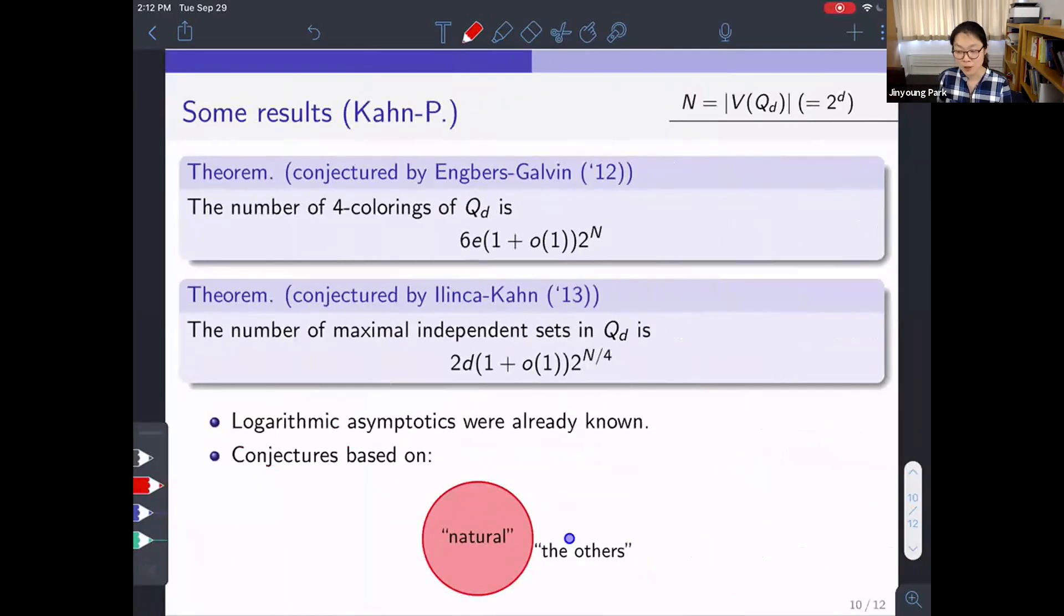Let me state some of my results. This is joint work with Jeff Kahn. First, we showed that the number of 4-colorings of Q_d is asymptotically 6 times e times 2^n. And second, we showed that the number of maximal independent sets in Q_d is asymptotically 2 times d times 2^(n/4). I don't have time to go into the details. But let me talk about two things. First, the logarithmic asymptotics for the above two questions were already known, and it only used the fact that Q_d is regular. And our contribution was to find the actual asymptotics of the two questions. And for that, we had to use the structure of the Hamming cube very seriously.